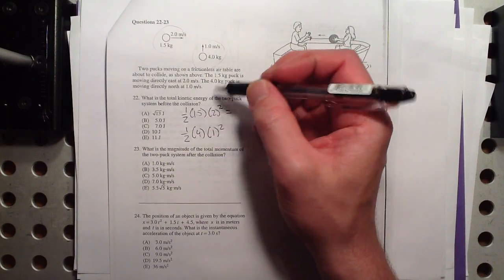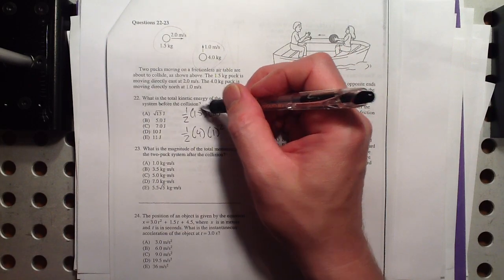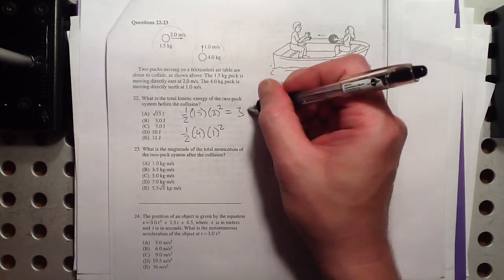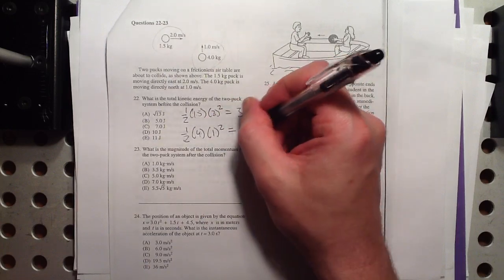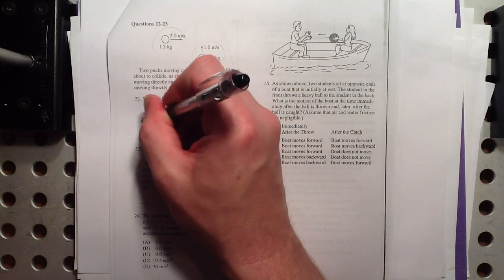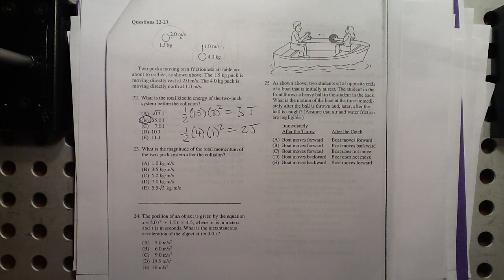This, let's see, that's 4 times 1.5 is 6. Half of that is 3 joules and half of that is 2 joules. So it looks like it's got 5 joules of total energy. Again, energy does not have direction, now or ever.